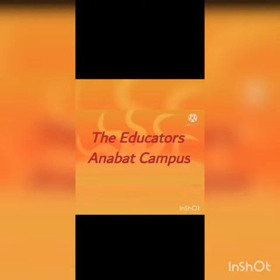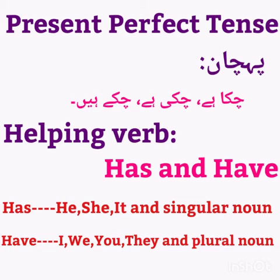Asalaamu alaikum students, how are you all? Hope you all are fine. Let's start our today's class. Today we are going to learn about present perfect tense. Let's revise present perfect tense. पहचान इनकी है चुका है, चुकी है, चुके है — ऐसा काम जो हम past में, अभी थोड़ी देर पहले कर चुके हैं, वो है present perfect tense.